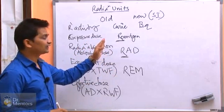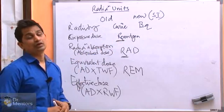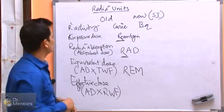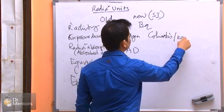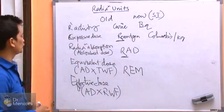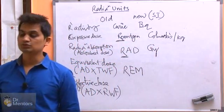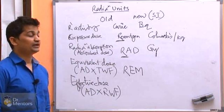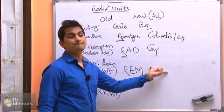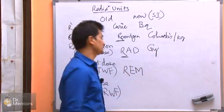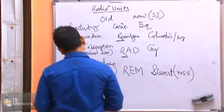So the old units are Roentgen, RAD, and REM. Their contemporary new SI units are: for exposure — Coulombs per kg; for absorbed dose — Gray, which is more often used in radiotherapy; for equivalent dose — Sievert (S-I-E-V-E-R-T), expressed as millisievert (mSv), which is widely preferred in diagnostic radiology.